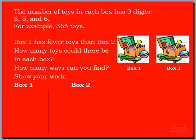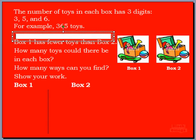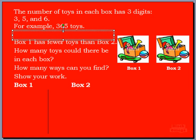Now for this question here, this is a bit of a word problem that I want to do with you because this will definitely help you understand. The number of toys in each box has three digits. So we have the digits 3, 5, and 6. We can mix these numbers up to give us the amount of toys in each box. So if you look to your right here, we have box 1 and box 2.